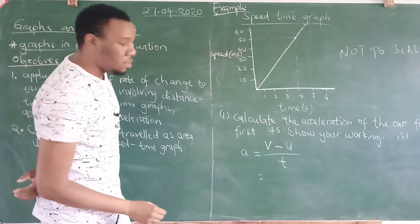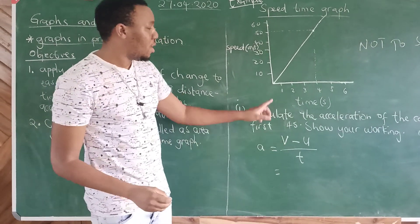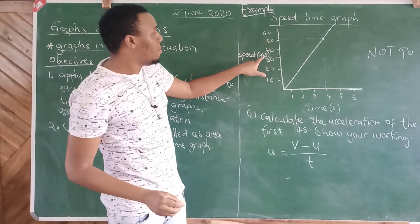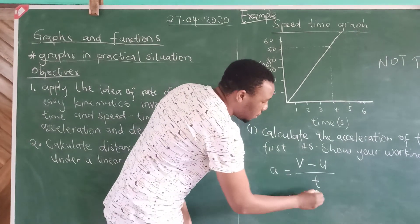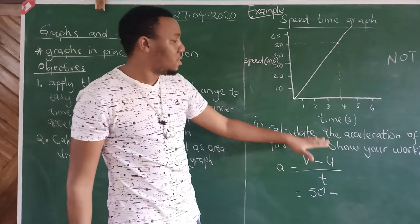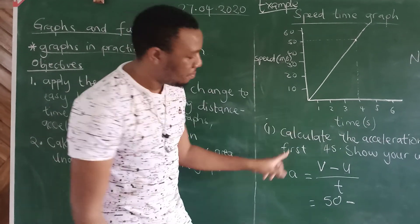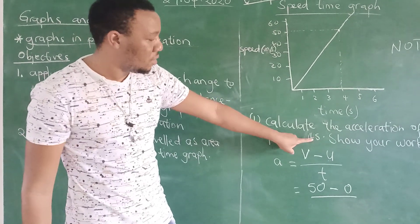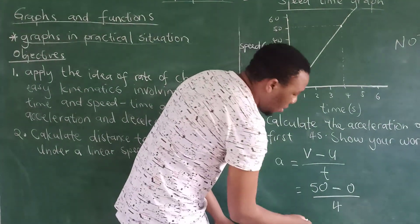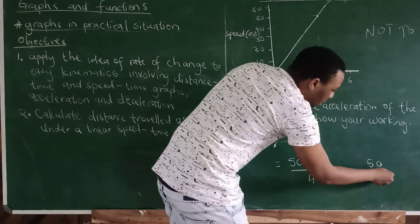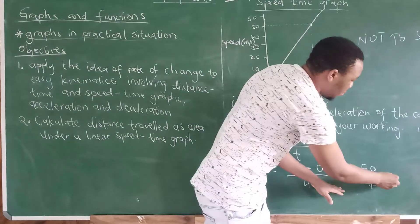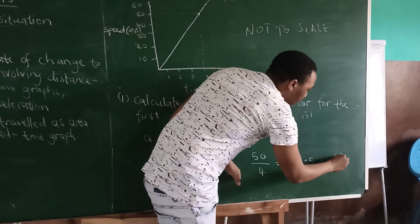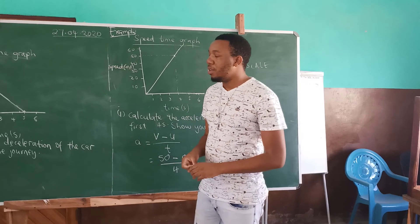We can now take our values and substitute to get the required answer. Final velocity is the speed at the four-second point, which is 50 meters per second. You are strictly required to calculate for the first four seconds. The initial velocity at the starting point is zero. So the calculation is: 50 minus 0, divided by 4, which gives us 12.5 meters per second squared — that is the acceleration.